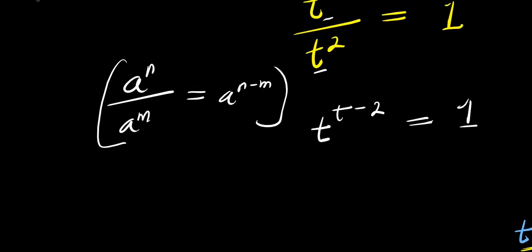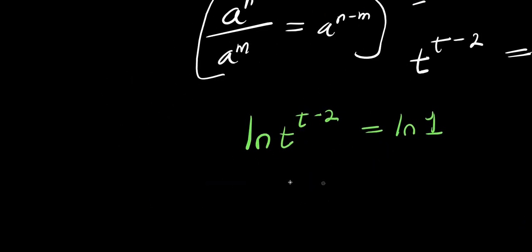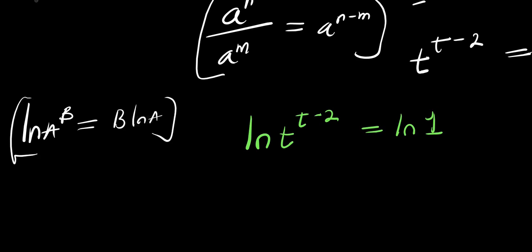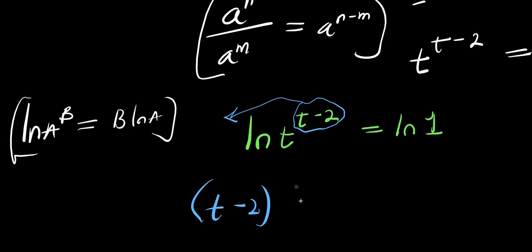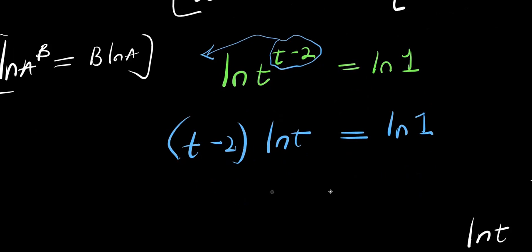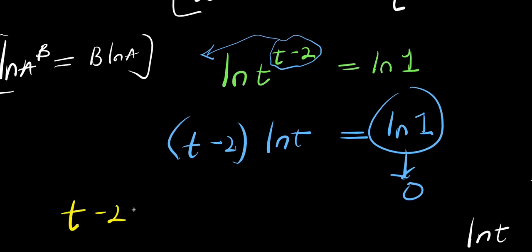The next step is to apply ln. I have ln of t to the power of t minus 2, and this equals ln of 1. Applying the logarithm property — ln of a to the power b equals b times ln a — the exponent t minus 2 comes out front: (t minus 2) times ln t equals ln 1. Since the natural log of 1 is 0, we have (t minus 2) times ln t equals 0.